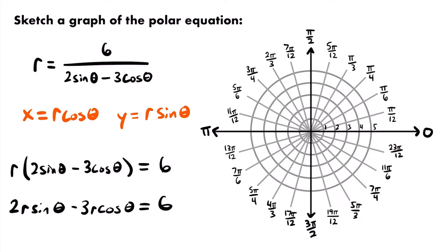Now look at what we have: expressions of r sine theta and r cosine theta. From our conversion formulas, x equals r cosine theta and y equals r sine theta. So we can replace r sine theta with y and r cosine theta with x. That gives us 2y minus 3x equals 6 — a rectangular equation in terms of x and y that is equivalent to our original polar equation.